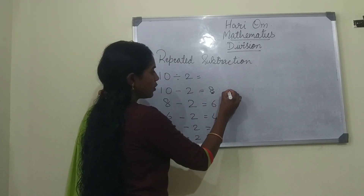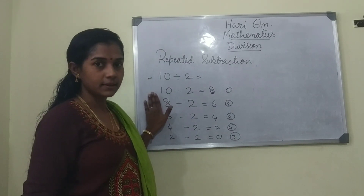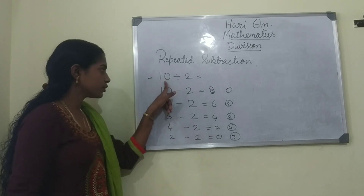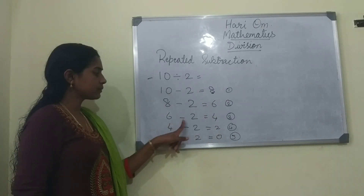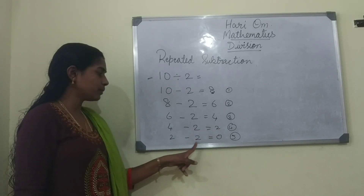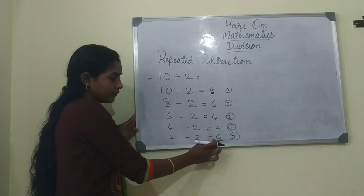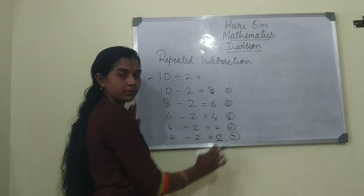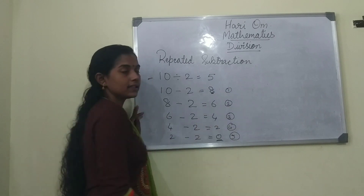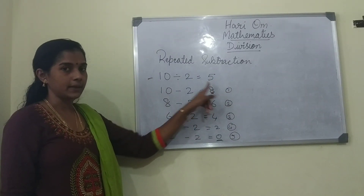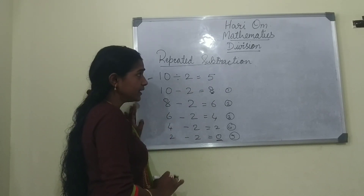So how many times have we subtracted? 1, 2, 3, 4 and 5. This is called repeated subtraction. So 10 divided by 2: 10 minus 2 is 8, 8 minus 2 is 6, 6 minus 2 is 4, 4 minus 2 is 2, and 2 minus 2 is 0. We subtract repeatedly with 2 till we get 0. The number of times we subtracted is the answer — 5 times. So 10 divided by 2 is 5.